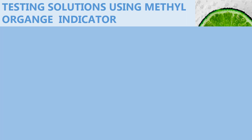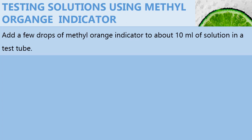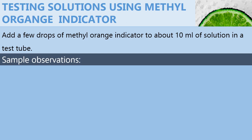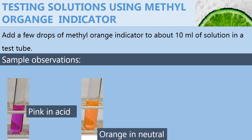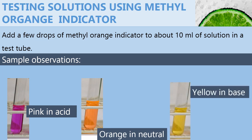When using methyl orange indicator, you add a few drops of methyl orange indicator to about 10 ml of solution in a test tube. The sample observations are: it will turn pink if the solution is acidic, it will be orange if the solution is neutral, and it will show yellow color if the solution is basic.